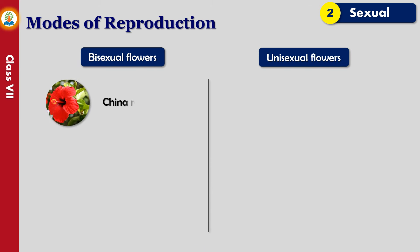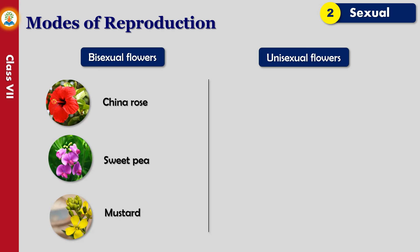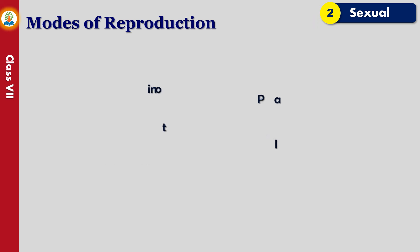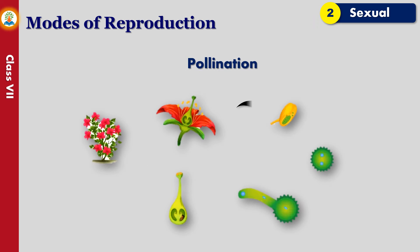Flowers such as china rose, sweet pea, and mustard have both sex organs in a single flower and are called bisexual flowers. Since they have all parts of the flower, they are also called complete flowers. Some others, such as flowers of papaya and mulberry plants, have either male or female sex organs and are called unisexual flowers. Since they lack one of the sex organs, they are also called incomplete flowers.